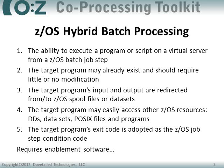So what do we mean when we refer to ZOS Hybrid Batch Processing? We can capture the definition with five discrete steps. First, we want the ability to execute a program or a script on a virtual server from a ZOS Batch job step. Furthermore, we want the Batch job step to run synchronously with that program on the remote server, so that when the program completes on the remote server, the job step completes as well and we continue with the next job step in the batch stream.